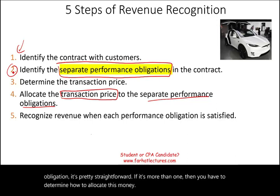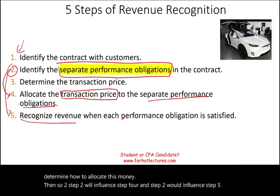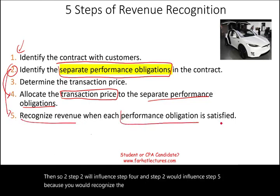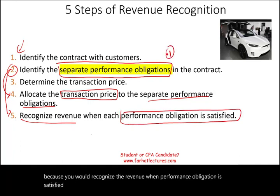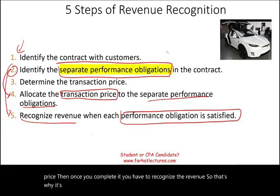Step two will influence step four, and step two will influence step five, because you would recognize the revenue when the performance obligation is satisfied. So first, you have to identify that performance obligation, then give it a price, and once you complete it, you recognize the revenue. That's why it's an important step in this process.